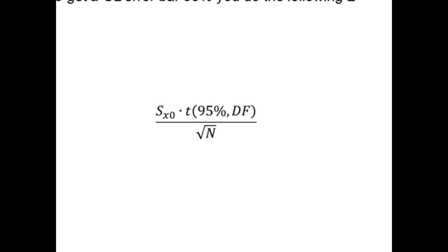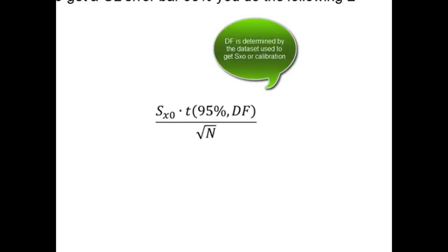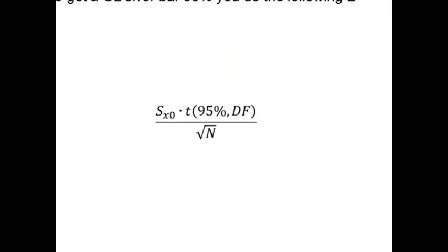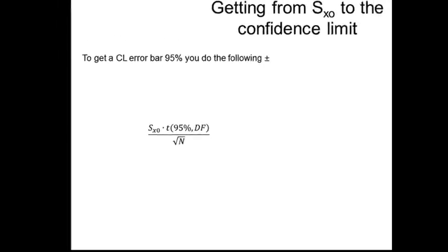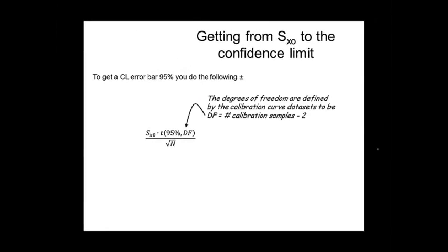So since you got to SX0 from your linear calibration data set, the degrees of freedom has nothing to do with how many times you made the measurement of your unknown. It only has to do with your calibration data set. So DF is the degrees of freedom defined by the number of samples in your calibration. If you went from one, two, three, four, five ppm, then you would have five and N equal to five. What's really important to realize is the N on the bottom is different.